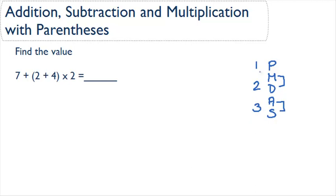So let's start off with our first step. Our first step is parentheses, so we need to find in our problem where the parentheses are. Here we have 2 plus 4 in parentheses, so the first thing we want to do is to simplify that. 2 plus 4 is 6, so we can simplify this and then bring down the rest of our equation without the parentheses. Now we have 7 plus 6 times 2.